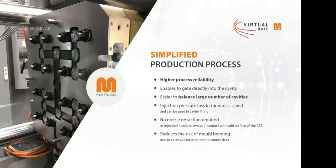Looking at the production process in detail: we have higher process reliability. With valve-gated cold runner blocks we can gate directly into the cavity on the part without rubber runners. We have the possibility to balance a large number of cavities through the cold runner nozzles — and it is easier to balance a cold runner block than a hot runner mold. The machine nozzle can be in direct contact with the cold runner distribution system. With the MAP-FIFO Original fixed nozzle system, no retraction of the injection unit or nozzle is necessary.